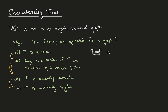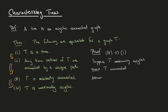Finally, let's show that property 4 implies property 1, which will close the loop of implications and establish all four equivalences. We suppose that T is maximally acyclic and need to show that T is a tree — that is, acyclic and connected. We already know T is acyclic because we're assuming it's maximally acyclic, so we just need to show that T is connected. We again do this by contradiction: we assume there exist vertices x and y in T that are not connected, meaning there's no xy path in T.